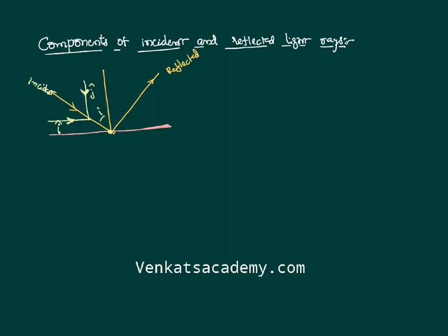I want to resolve this reflected light also into components. This is the horizontal component and this is the vertical component. You might have noticed that as this reflected light ray is moving away from the origin, the components also shall move away from the origin. This is again the horizontal i-component, and it is along the y-axis, so the y-component is shown with j-cap direction.